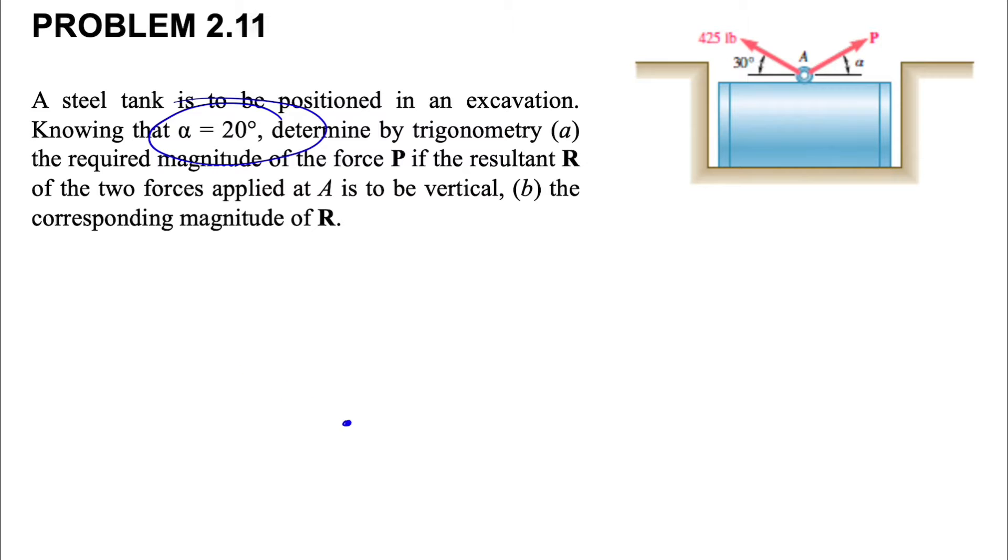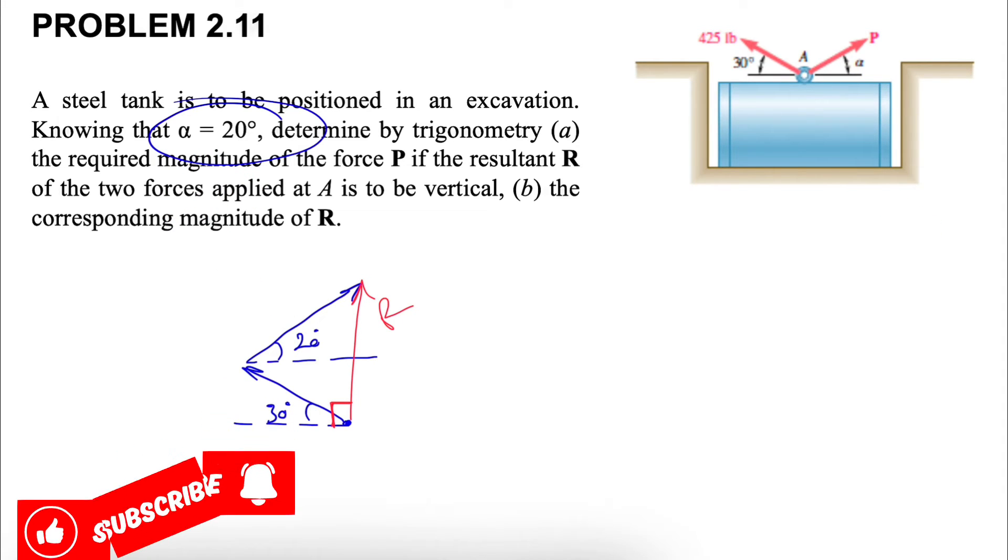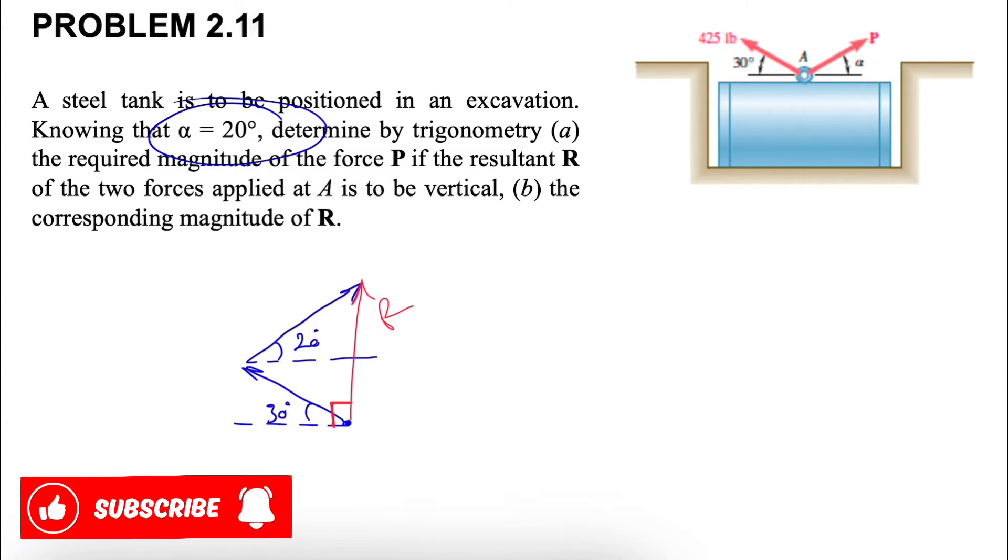Let's find the resultant of these two forces using the triangular rule. We have the force of 425 pounds making 30 degrees with horizontal. We have force P making angle alpha, or 20 degrees, with horizontal. I'm going to show the resultant force with red, which will be our R.